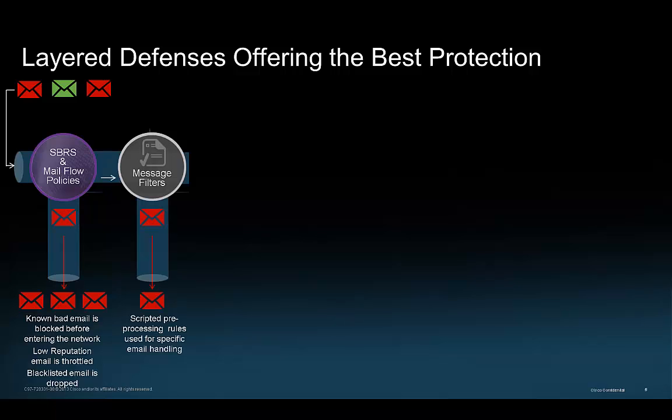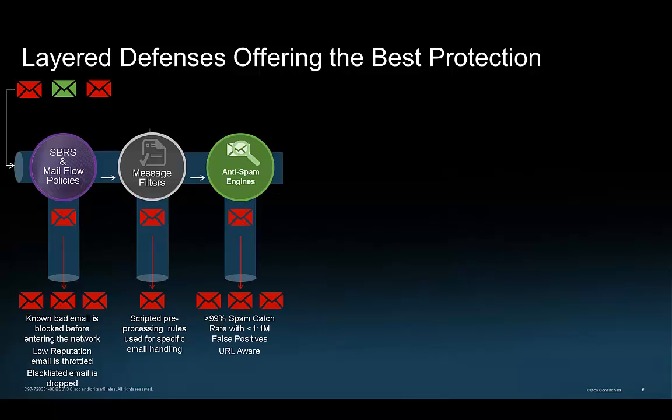Next is message filters, where we can use scripts to determine mail flows for volume, attachments, or other desired attributes. The anti-spam layers block the garbage with a 99-plus percent catch rate and fewer than 1 in 1 million false positives. Here you have the choice of three anti-spam offerings, one of which uses multiple engines to detect even more spam.